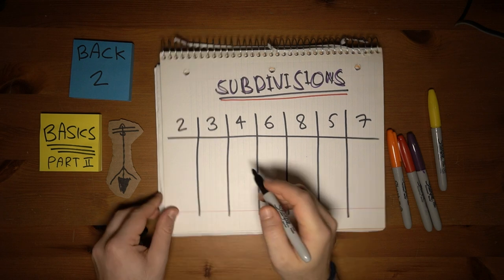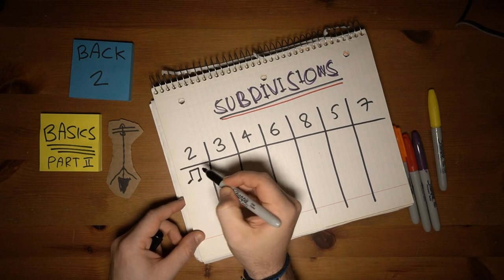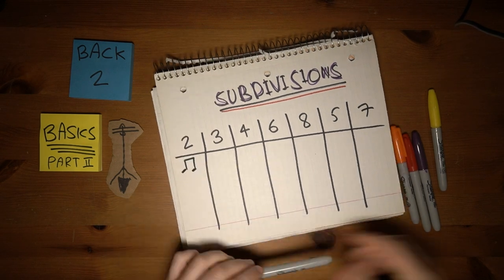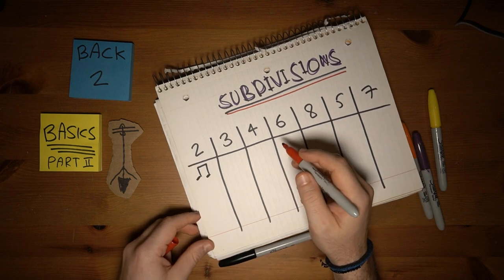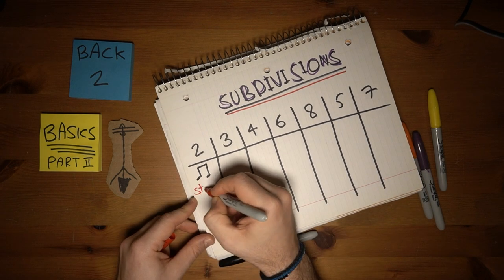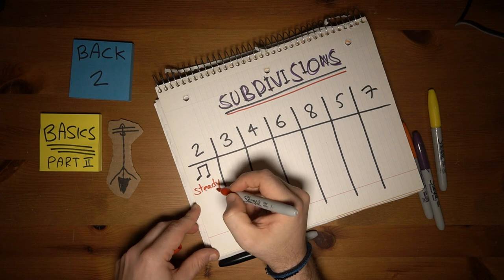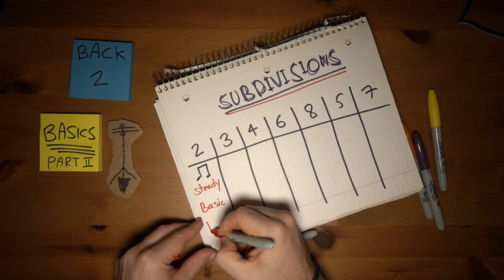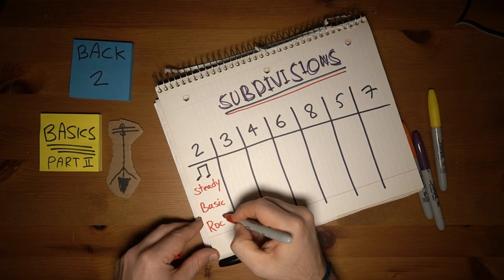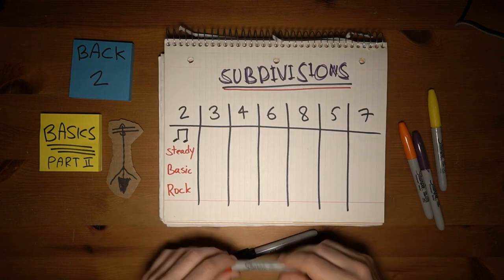Starting with 2 — this is called 8th notes, because we're dividing the quarter note into two parts. The 8th notes sound pretty steady and pretty basic; they have like a rock feel.